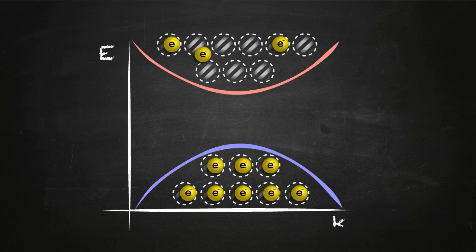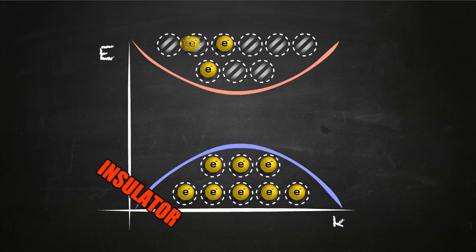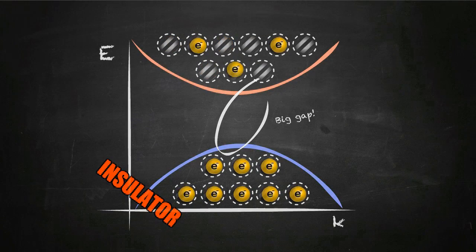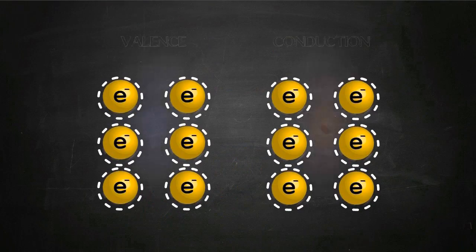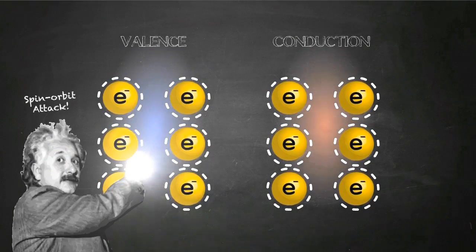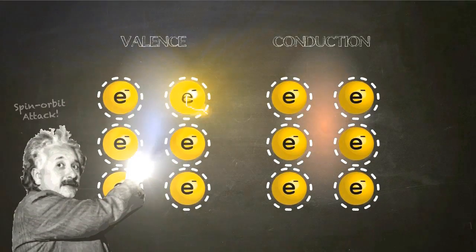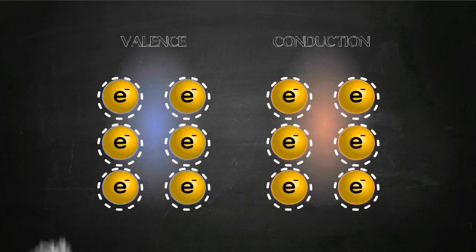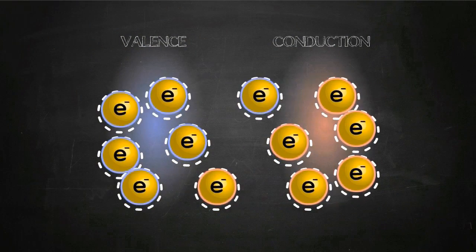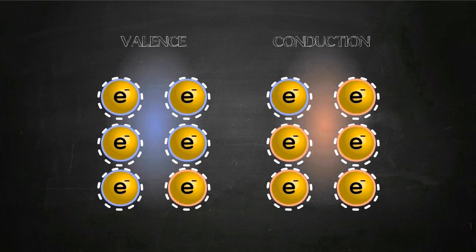As you may have guessed, a topological insulator is an insulator with a big gap, but it's a very peculiar insulator because its electrons are under a strong spin-orbit interaction, a relativistic phenomenon.